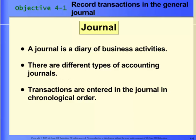Our first objective is to learn how to record financial transactions in the general journal. A journal is a book of original entry. Just like in school when you kept a diary or journal of your activities, a business or accounting journal does the same thing — it keeps a record of the financial events, or transactions, in the order that they occurred. We call this chronological order.